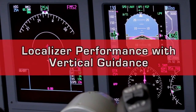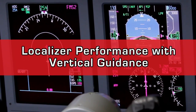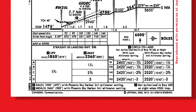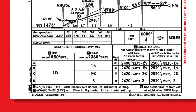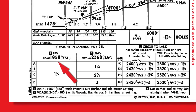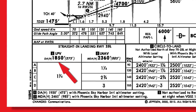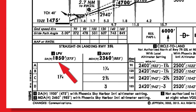LPV stands for Localizer Performance with Vertical Guidance. LPV is a category of approach minimums for RNAV approaches that are typically lower than LNAV or LNAV-VNAV minimums.